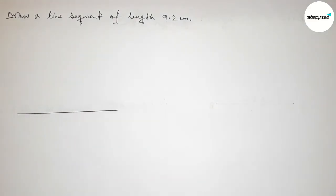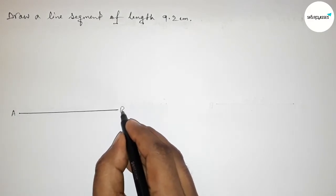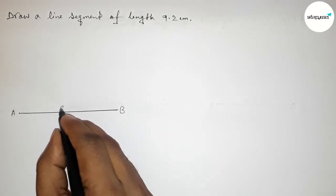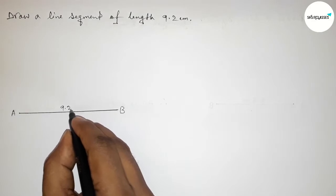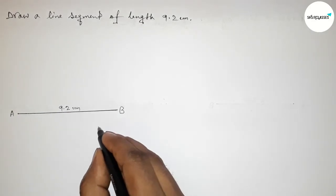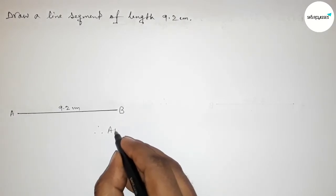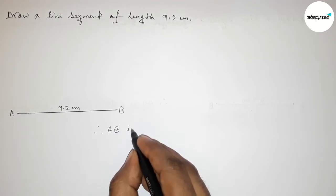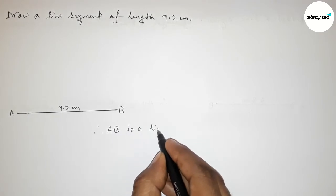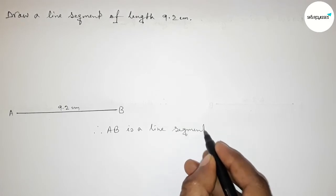And taking here point A and here B, so AB is a line segment of length nine point two centimeter. So therefore, here we can say that AB is a line segment of length nine point two centimeter.